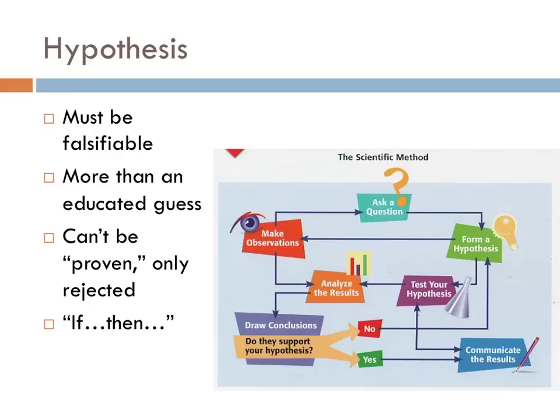A scientific hypothesis should not be, as you've probably defined it throughout your science education, merely an educated guess. When universities conduct research costing tens of thousands of dollars that require federal grants for funding, they're expected to have a really good idea of what should happen in a given circumstance and why. One of the requirements is that a hypothesis must be falsifiable — it must be able to be shown incorrect. While hypotheses can be rejected, they're never proven; they're just supported by data. Hypotheses are often written in an if-then format: for example, if you study more than an hour for a test, then your scores on that test will increase.